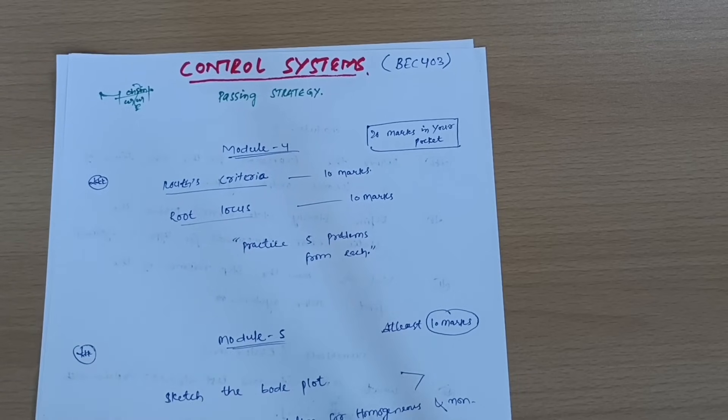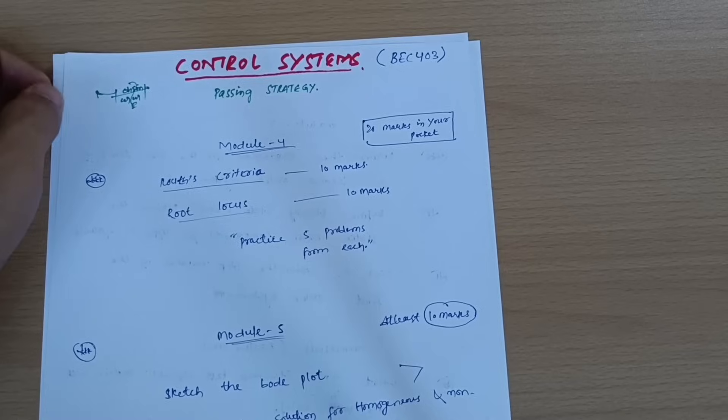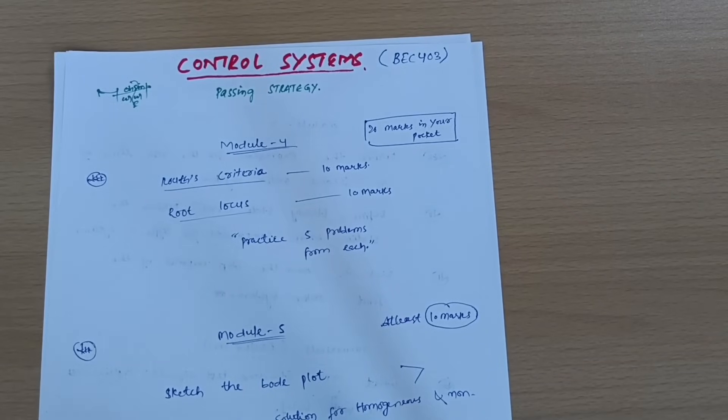I have taken the subject Control Systems. This is a problematic subject. First of all, you should remove this thing from your mind that this subject can be passed only by theoretical portion. It is not possible. It is a problematic part and the numericals are very simpler ones which I will discuss here.